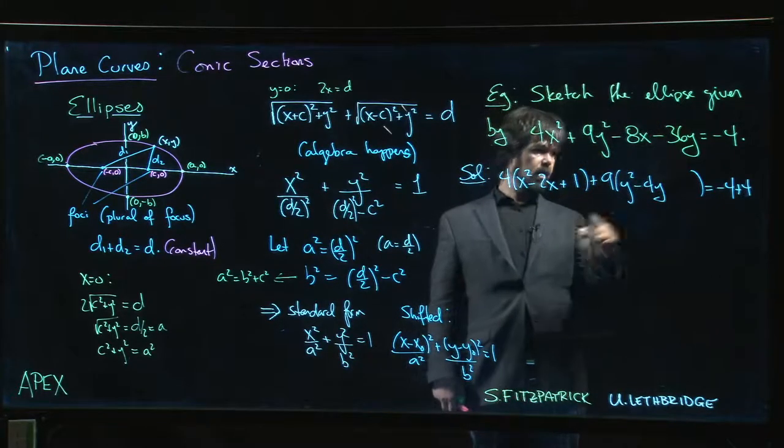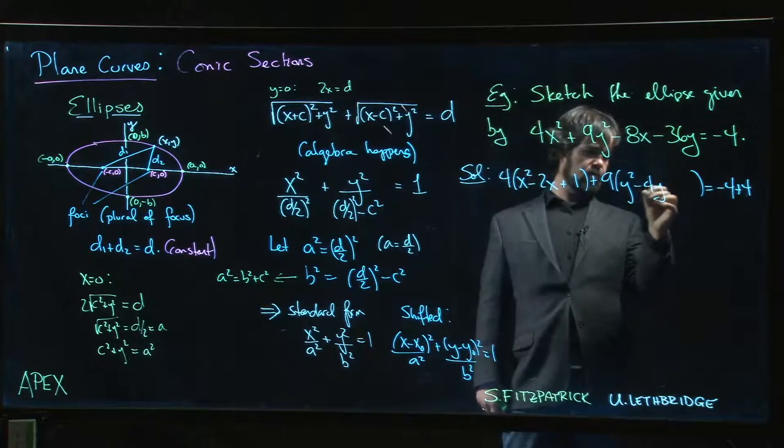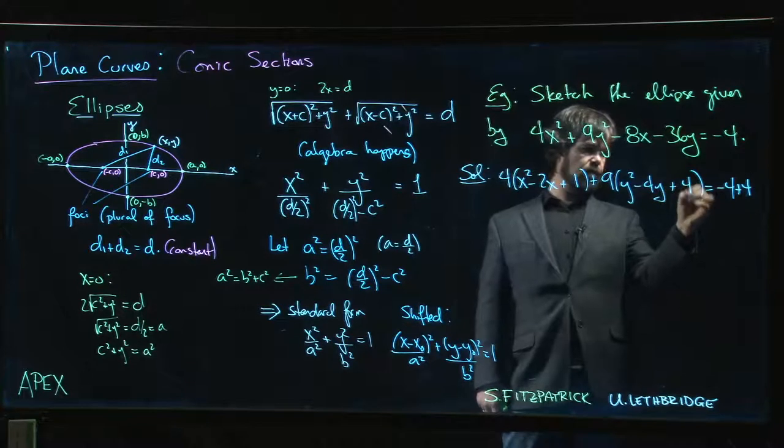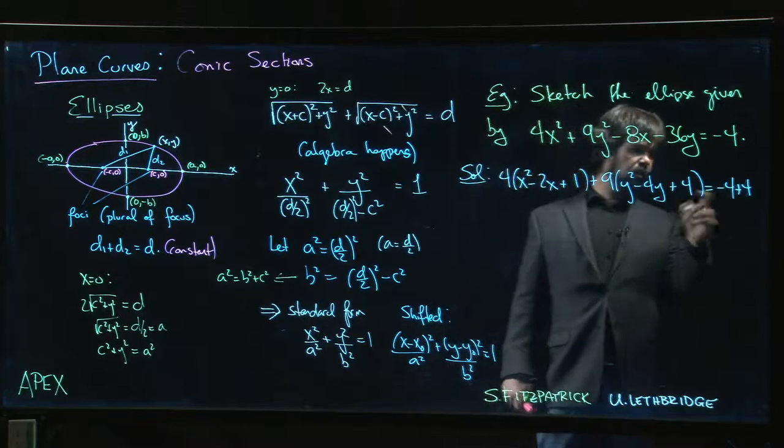Okay, and over here half of 4, square that. So half of 4 is 2, 2 squared is 4, 4 times 9 is really 36, so I've added 36 on this side. I should add 36 on the other side.